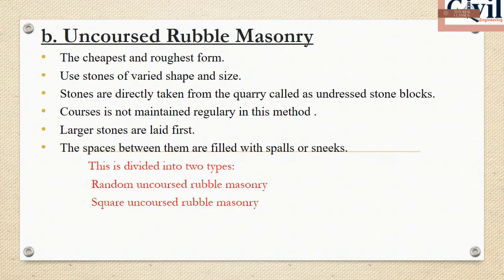The next type is uncoursed rubble masonry. This is the cheapest and roughest method. You can use stones of different sizes placed directly in the core. Stones are used regularly. We classify this further into random uncoursed rubble masonry.